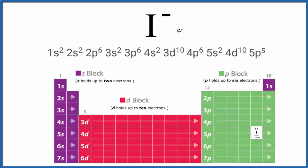So what we need to do, instead of 53, we have 54. And we're going to put it right here, 5p⁶. So now we have 5p⁶ as our last term.